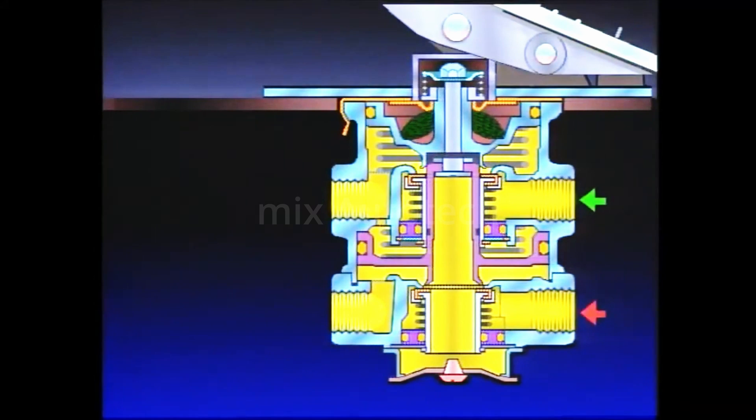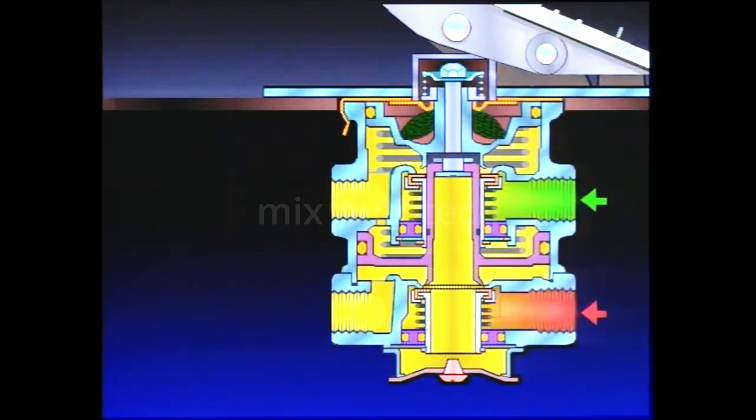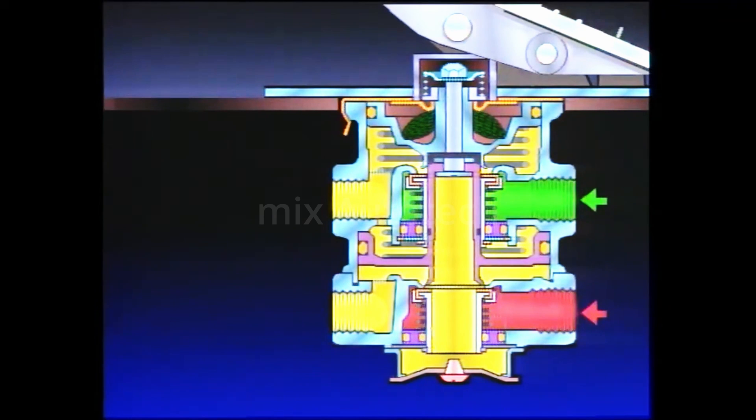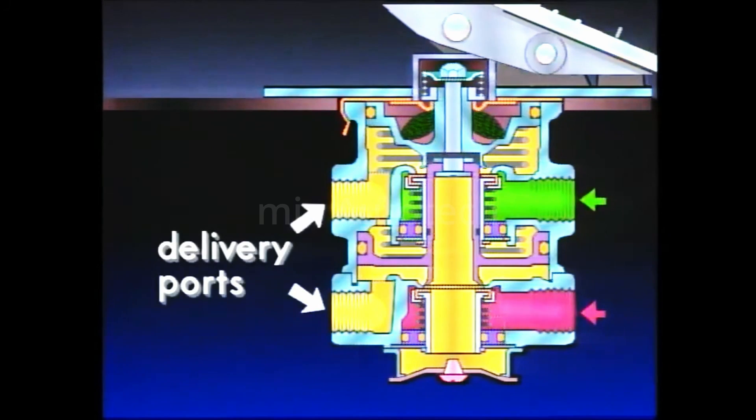Air from each reservoir enters its respective supply port on the brake valve. Because the circuits are normally closed, air does not pass through the valve until a brake application. The delivery ports are open to the exhaust at atmospheric pressure, shown in yellow.